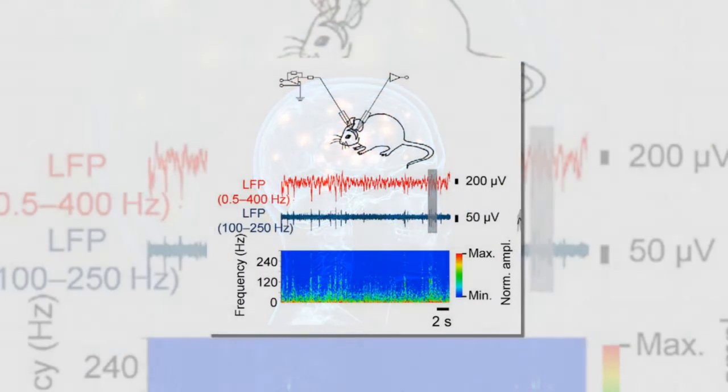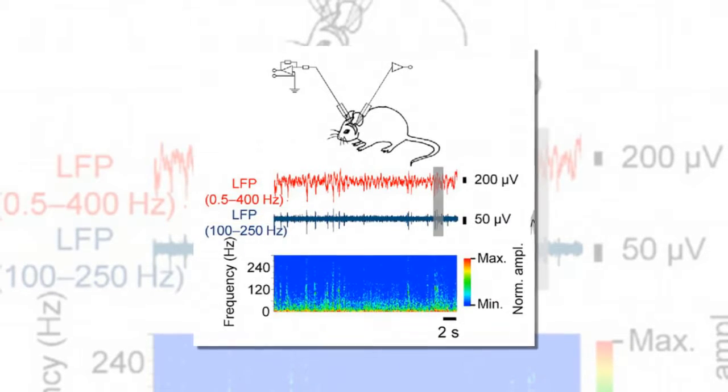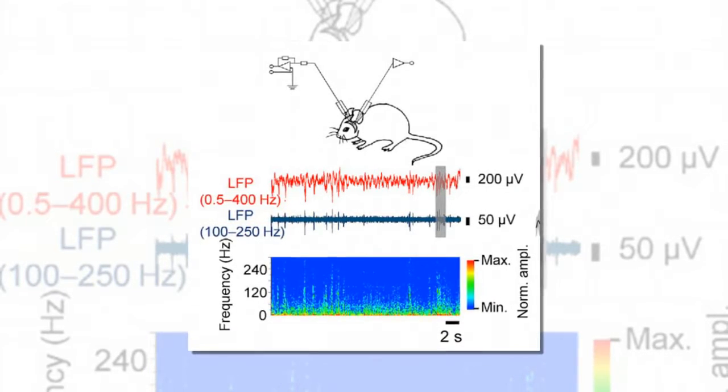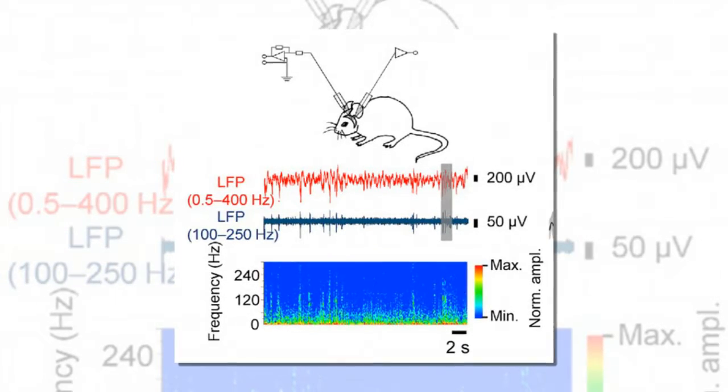The new study is a collaboration between Professors Peter Jonas and Joseph Csicsvari at the Institute of Science and Technology Austria, who found the mechanism that generates this oscillation of neuronal activity in mice.